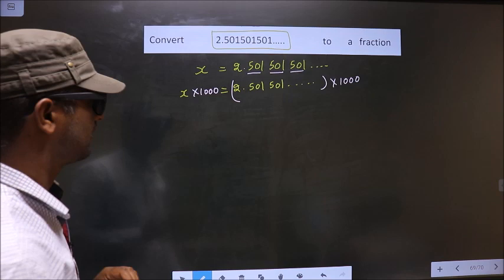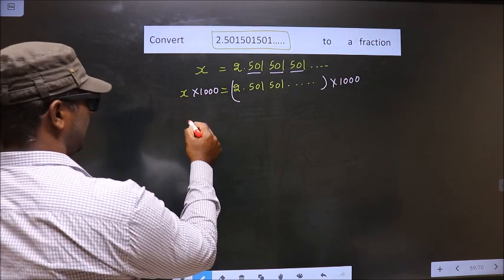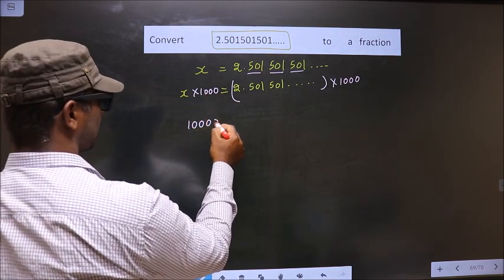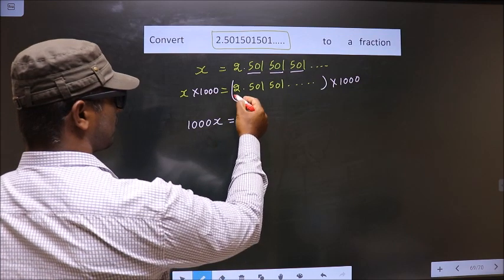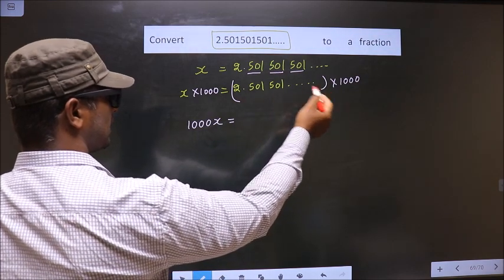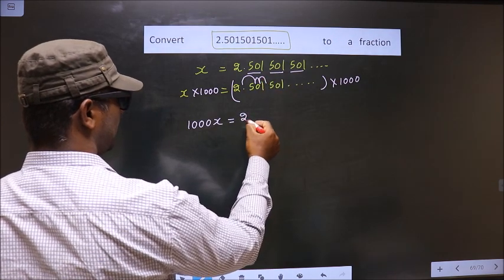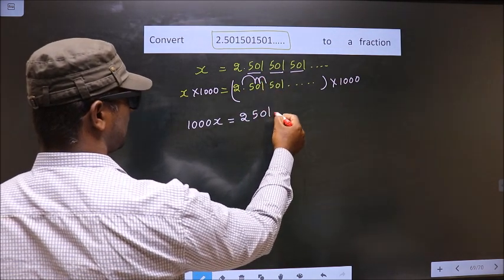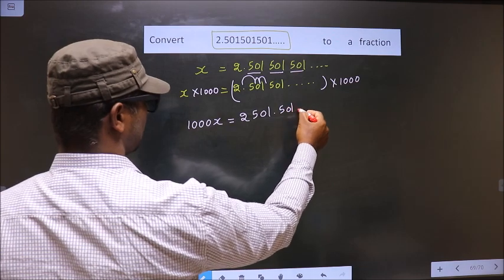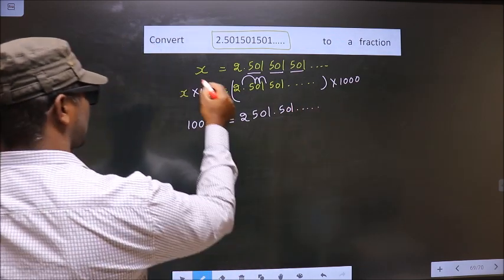Now here, this side I get 1000x equals... When I multiply this with 1000, the decimal will shift 3 places to the right, making it 2501.501 and so on.